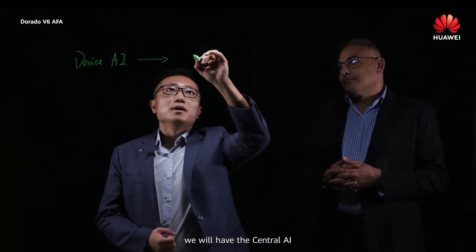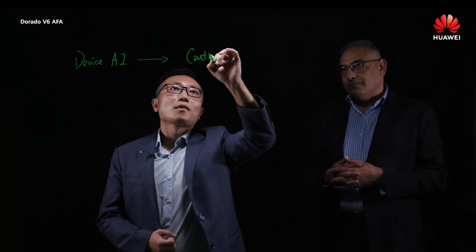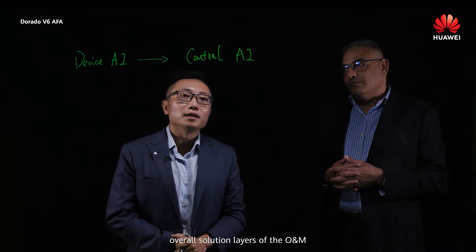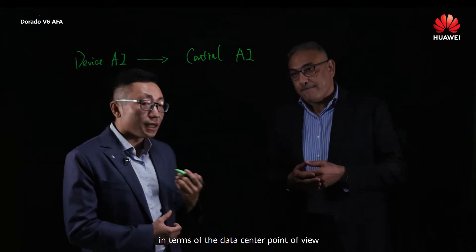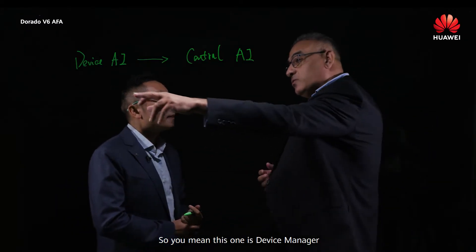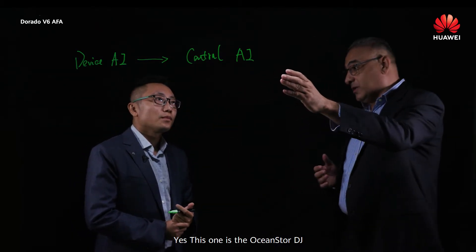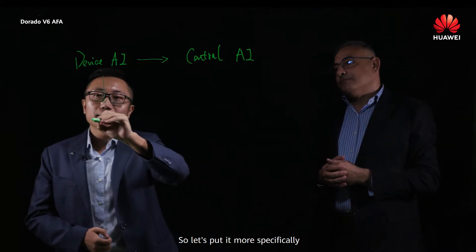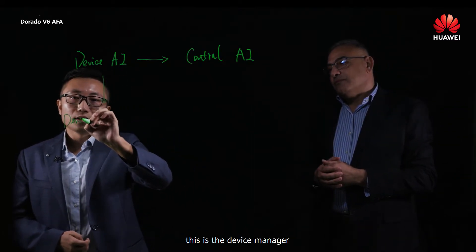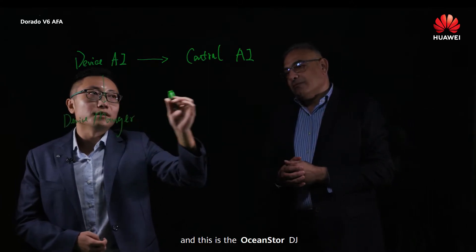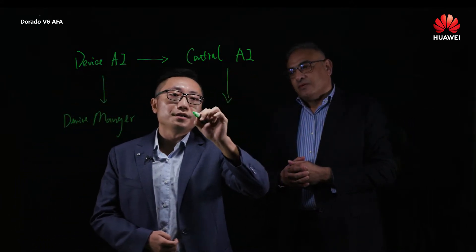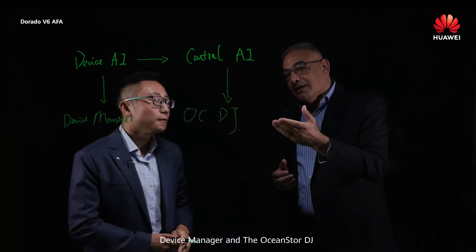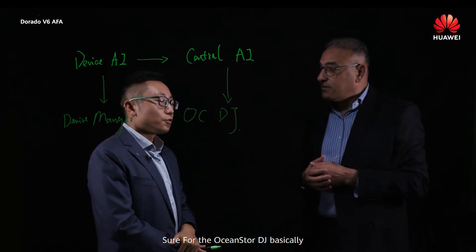The second level is Central AI, which gives you the overall solution layer of O&M from a data center point of view. This is the Device Manager, and this is the OceanStor DG. So what is the difference between the Device Manager and the OceanStor DG? What is the use case?